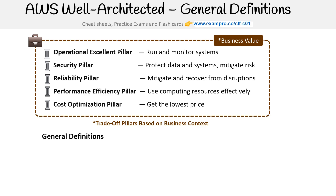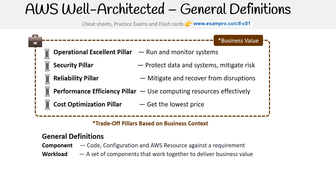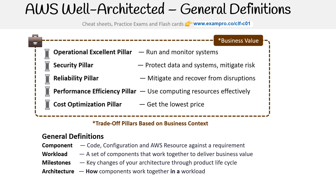Then we have some general definitions that we will come across. There's components — code configuration and resources against the requirement. A workload is a set of components that work together to deliver business value. A milestone refers to key changes of your architecture through the product lifecycle. Then there's architecture itself — how components work together in a workload. And then we have technology portfolio — a collection of workloads required for the business to operate.